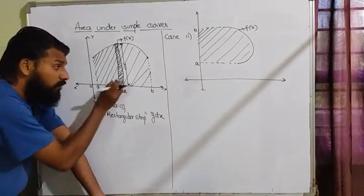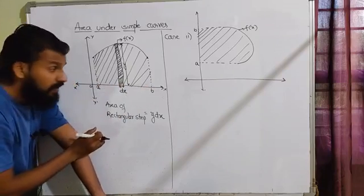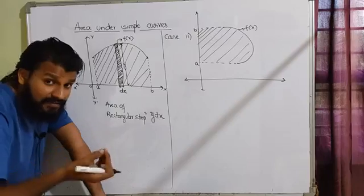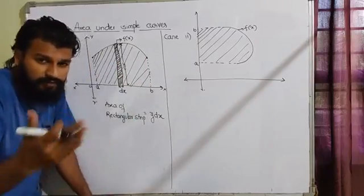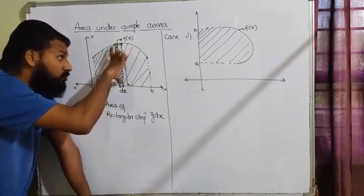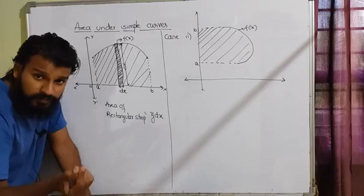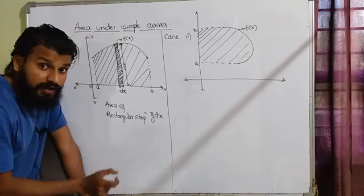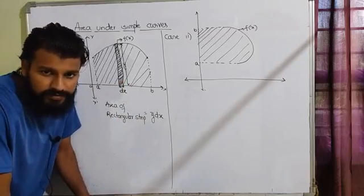Now, what I'm going to do is create very many such small vertical rectangular strips from x = a all the way to x = b. If we find the area of all those small rectangular strips and add them together, we get the total area of the region under the curve. The question is: how do we find and sum the areas of all such tiny strips? That's exactly where the application of integration comes in.